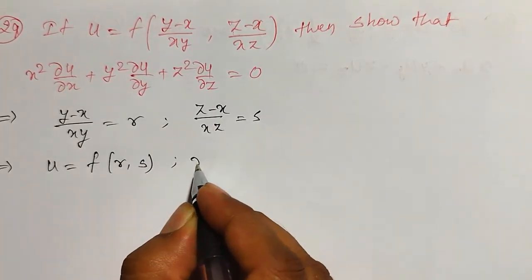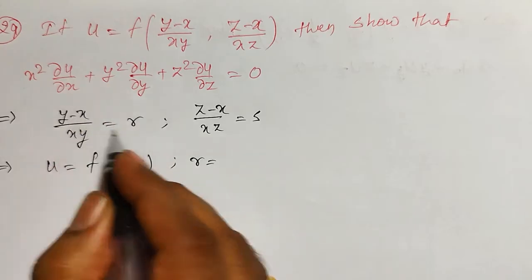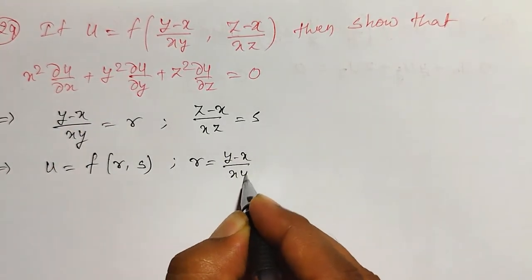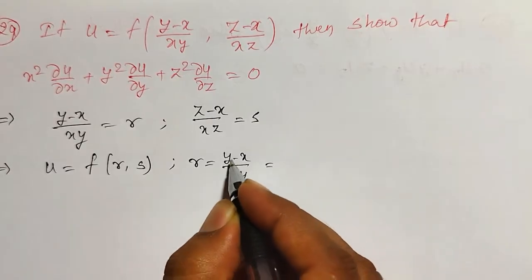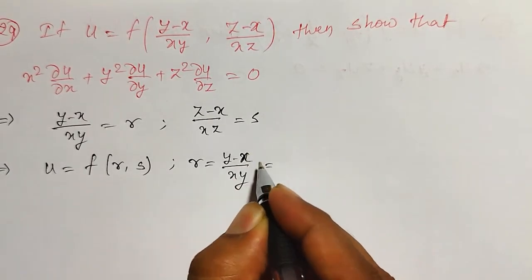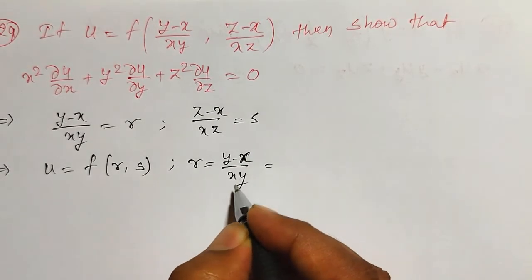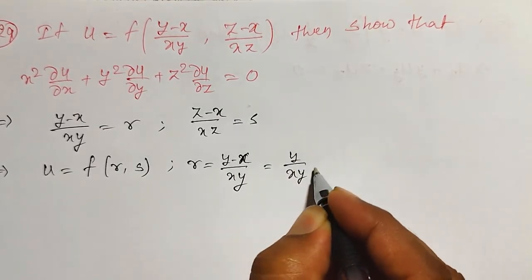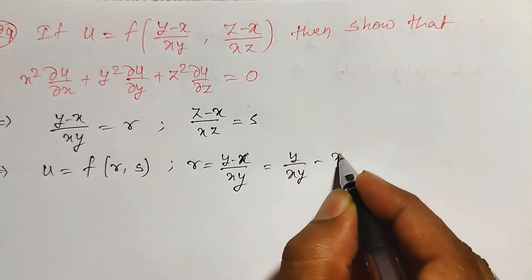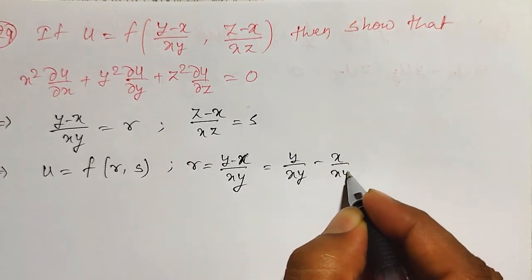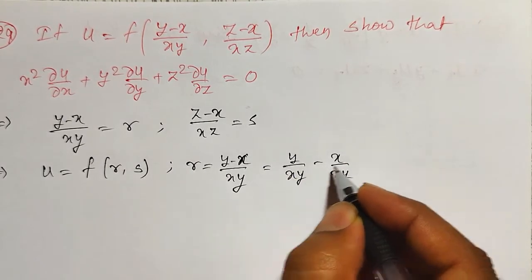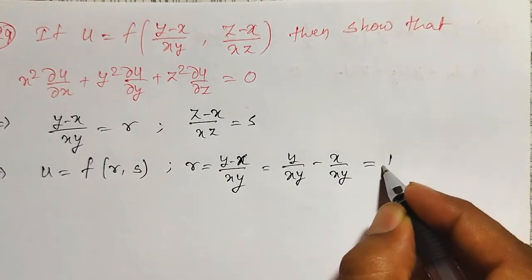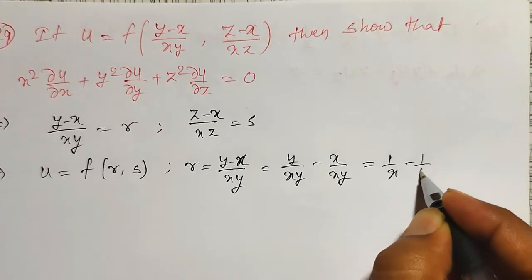And r is a function of y minus x divided by xy. I can split it because I will take the partial derivative — it will become simple. I will write it as y divided by xy minus x divided by xy. Then y cancels and x cancels, and I can write it as 1 by x minus 1 by y.